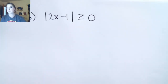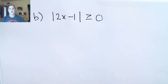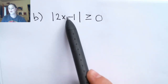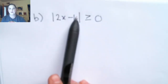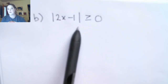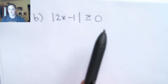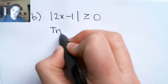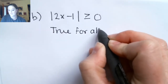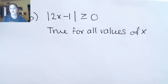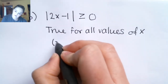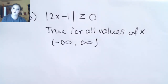Now this example says absolute value is greater than or equal to zero. When is the absolute value greater than or equal to zero? Well, always. No matter what you plug in for x — you can try some different values — no matter what happens, you will always have that the absolute value is greater than or equal to zero. So this is true for all values of x. Written as an interval: negative infinity to infinity.